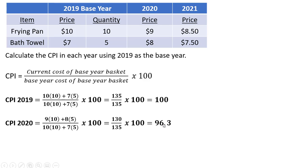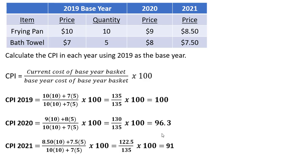You can see that the CPI fell here. And finally, in 2021, the current cost of this fixed year basket is going to be $8.50 times 10 plus $7.50 times 5. That appears in the numerator. And the denominator is going to be the same calculation as our previous two examples — it's just 10 times 10 plus 7 times 5. Doing the math here, we get a CPI in 2021 of 91. And since 91 is less than 96.3, we have, again, a period of falling prices on average.